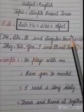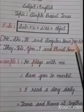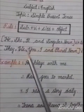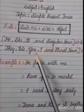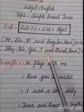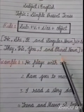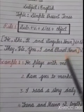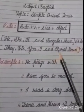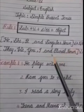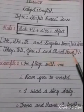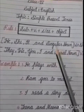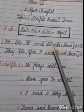Now we will learn where we don't use S or ES. With they, we, you, I, and plural noun — plural noun means more than one person, more than one name — in that condition, we only write the first form of the verb. We don't write S or ES.